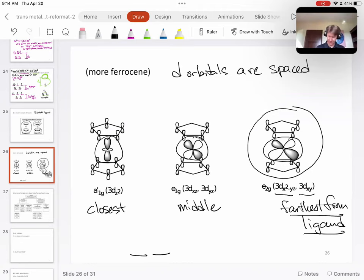so if this fits down here, these are going to be my dx squared minus y squared and dxy. Then there's going to be one, two.